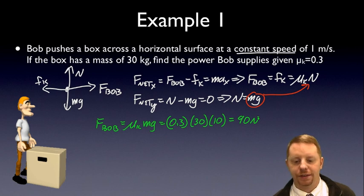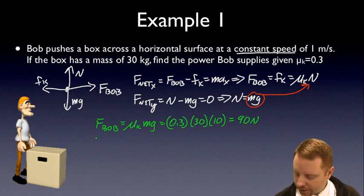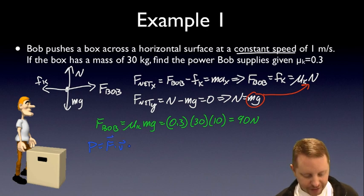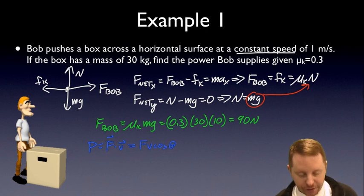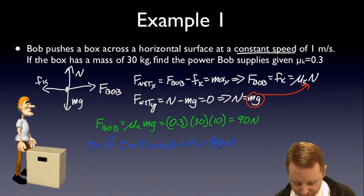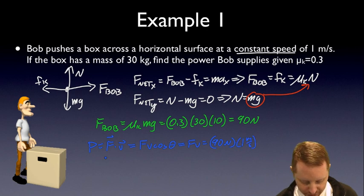Alright, we know the force that's applied. Now to get the power, we can go and take a look. Power is equal to force dotted with velocity. In this case, the force and velocity are in the same direction, so force dotted with velocity, Fv cos theta, if they're in the same direction, that theta is going to be 0 degrees, and the cosine of theta is 1. So that really just becomes force times velocity, or 90 newtons times 1 meter per second. And I come up with the power, 90 newton meters per second, or 90 watts.